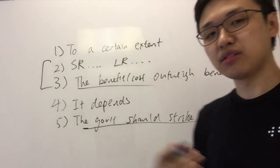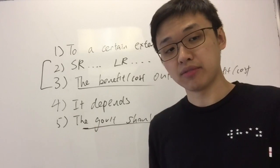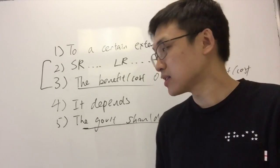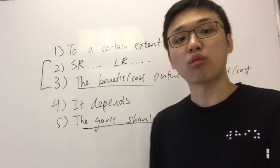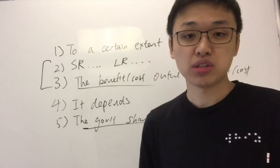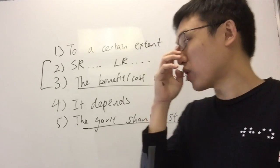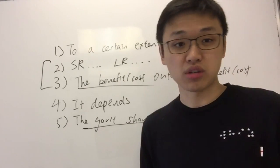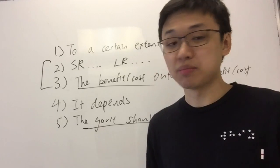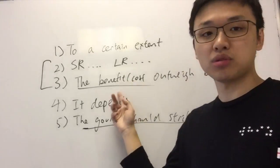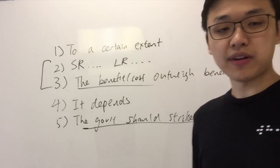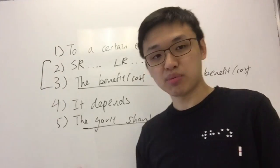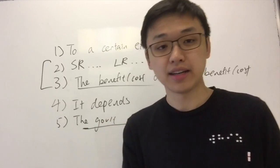For benefit versus cost with tariffs: the cost almost always outweighs the benefits because in the long run there is a loss in efficiency, which leads to a loss in economic growth. In some extreme cases, benefits could outweigh costs — for example, if local producers need protection from dumping. So it really depends on the situation. These five approaches can be used for paper one, paper two, and your IA as well. If you found this video useful, please share it with your friends and leave a comment.